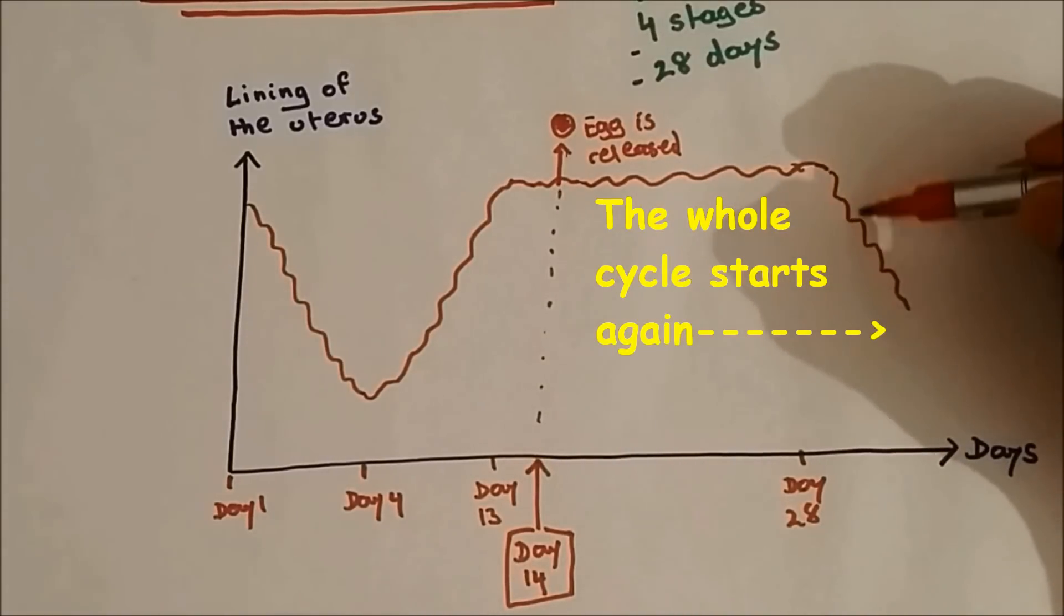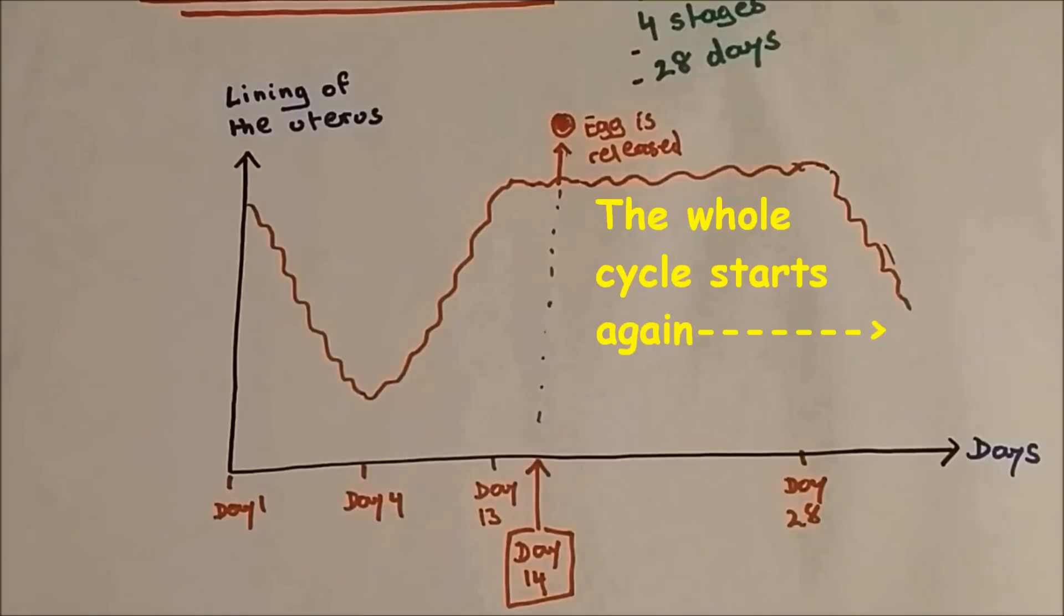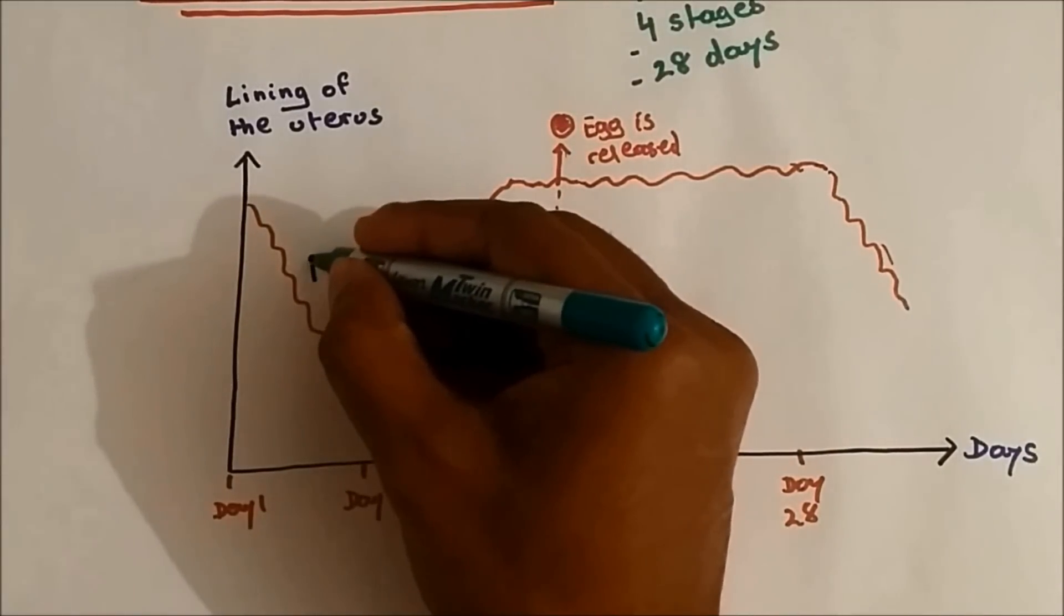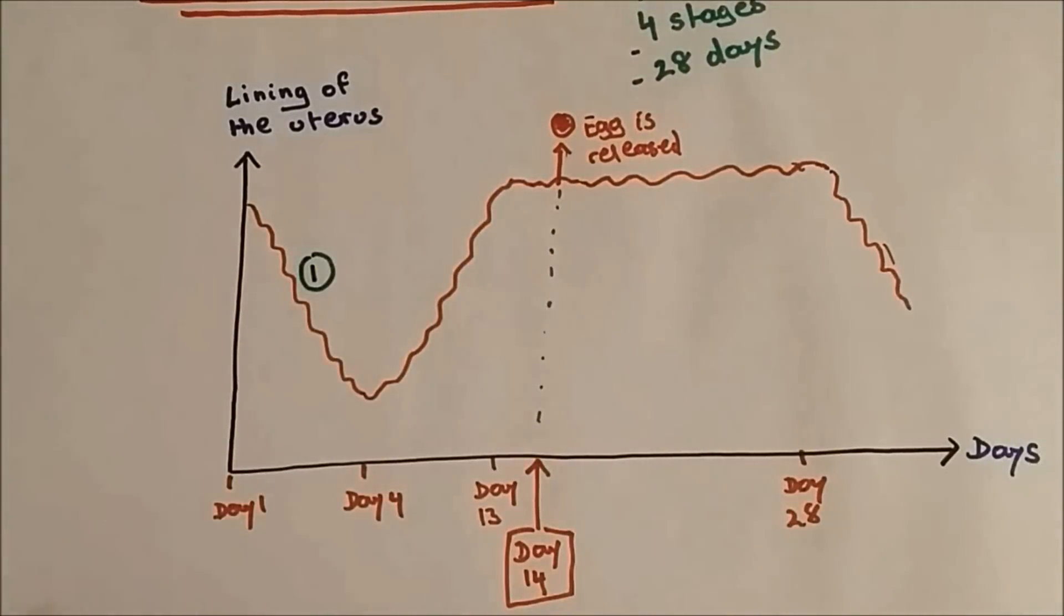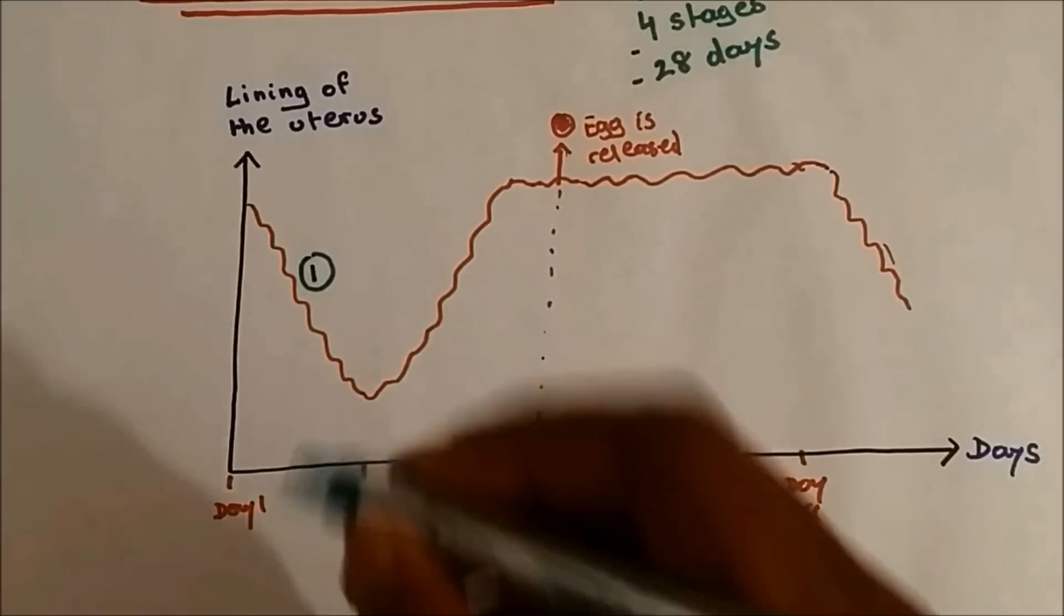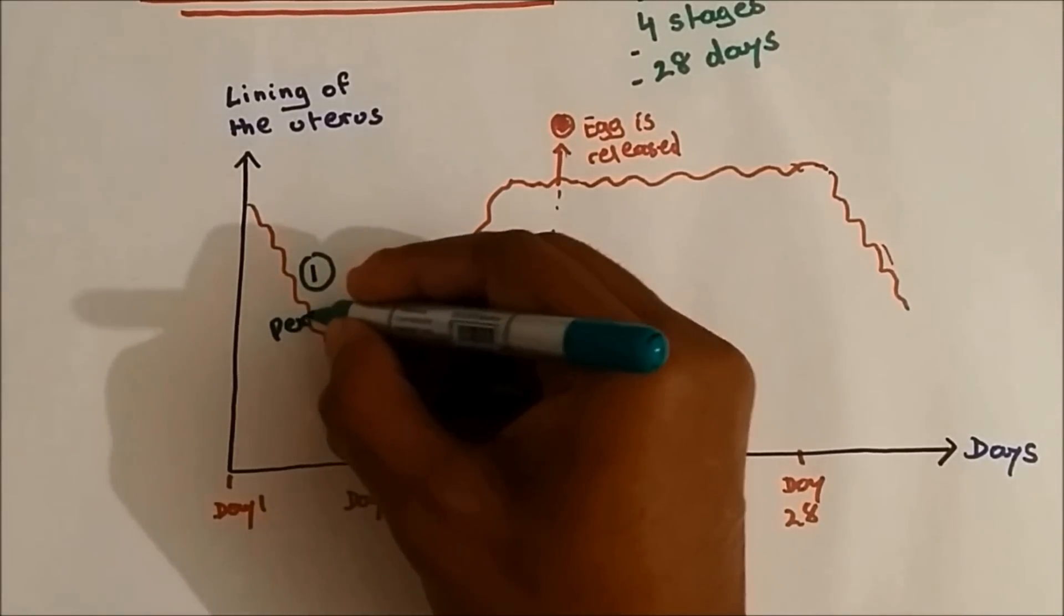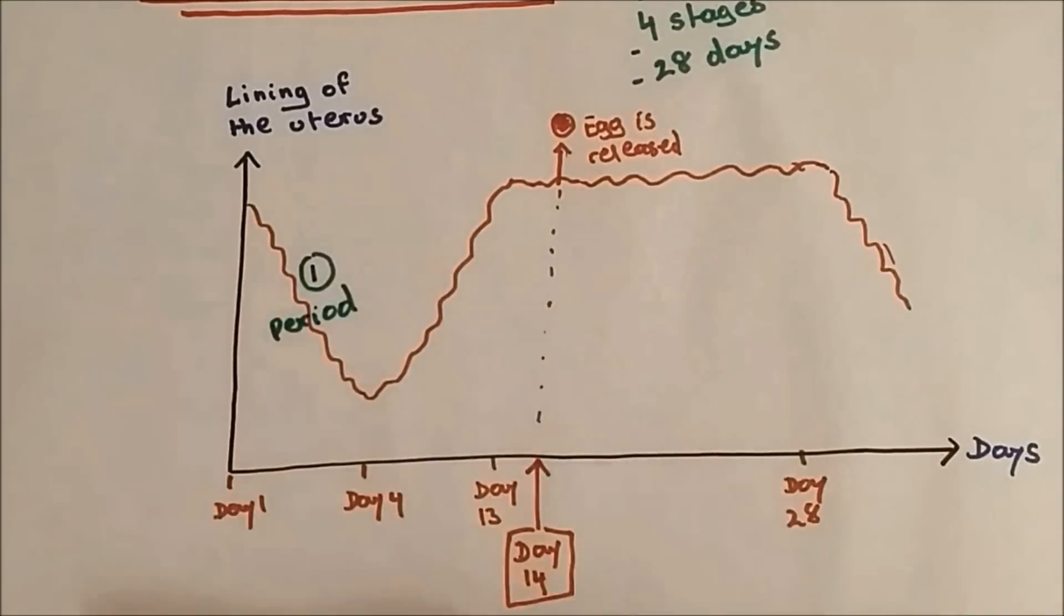So the cycle starts again. So let me repeat this: what is the first stage? Stage one, that's from day one to day four. The lining of the uterus breaks down and it's called period.